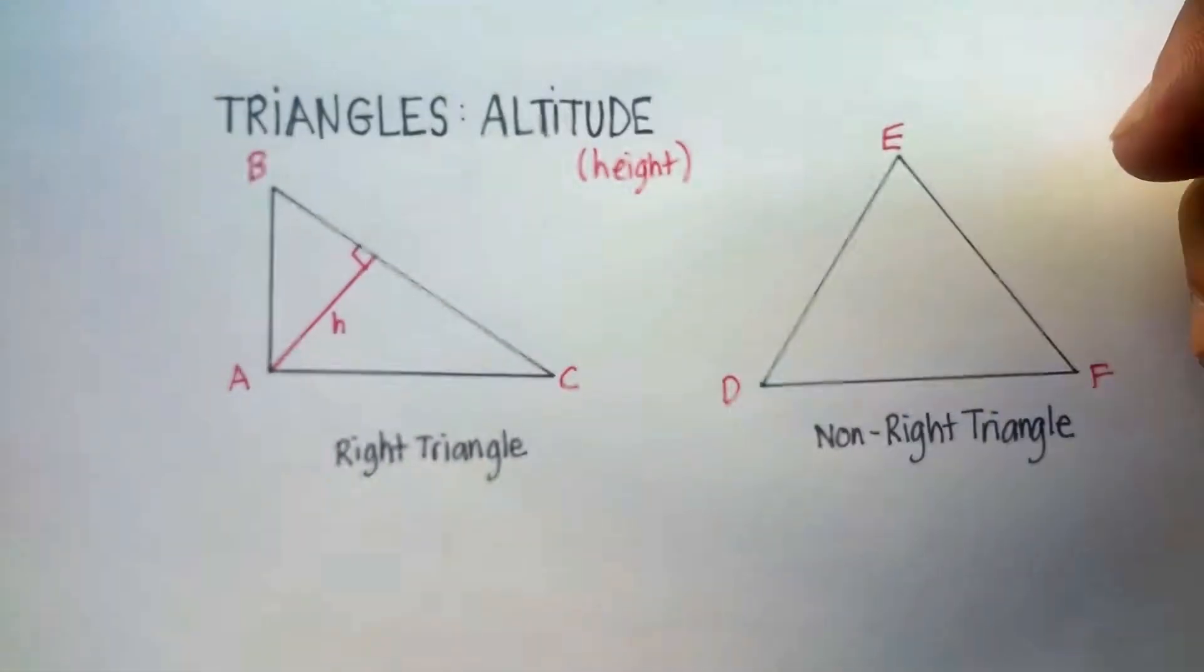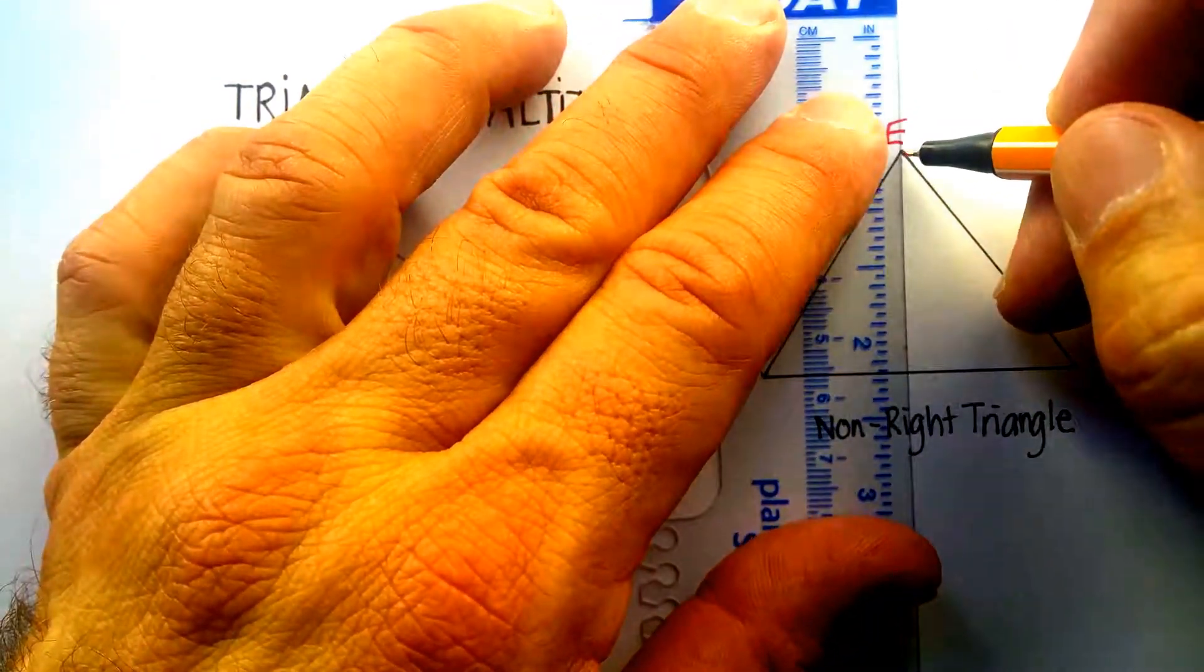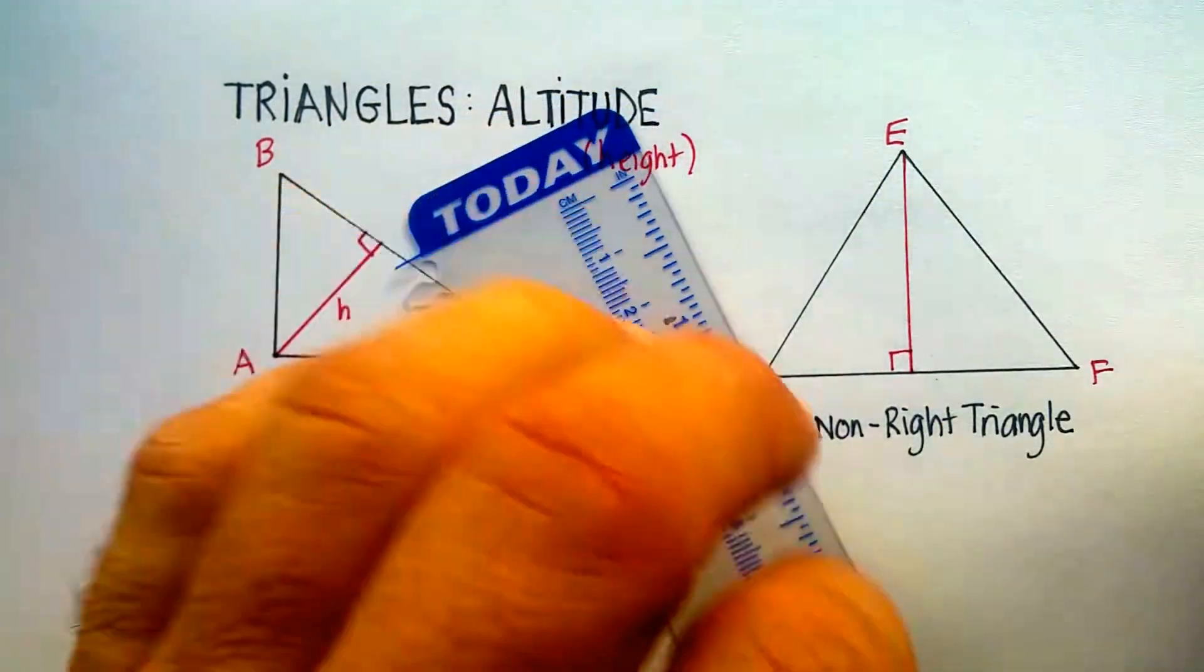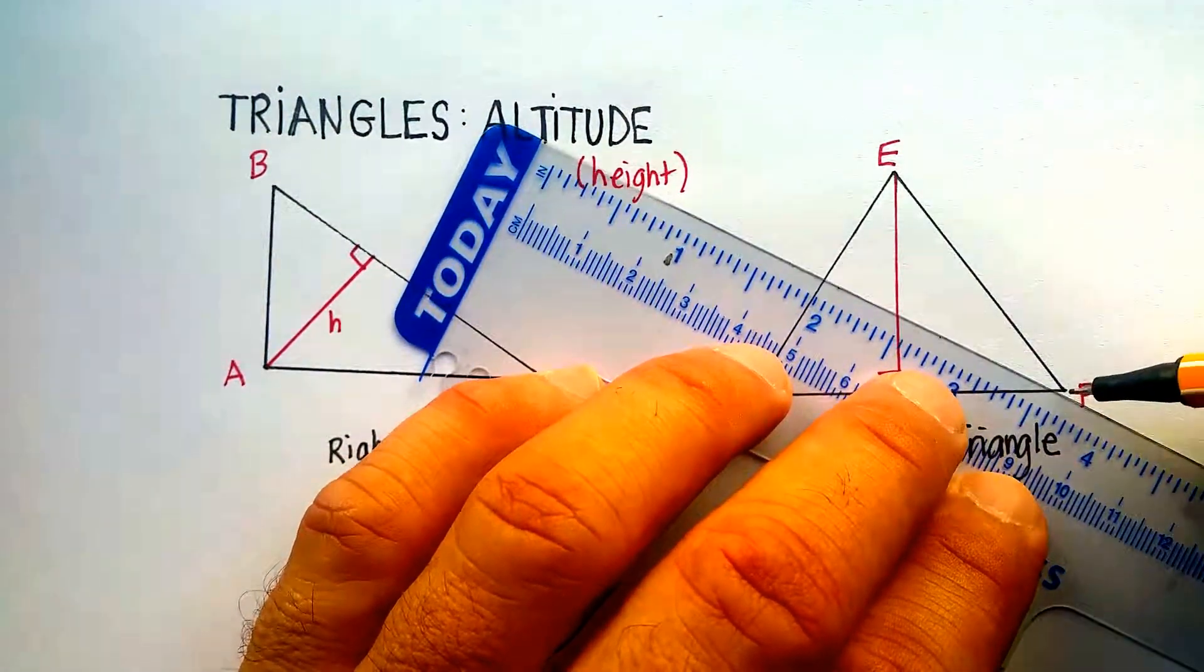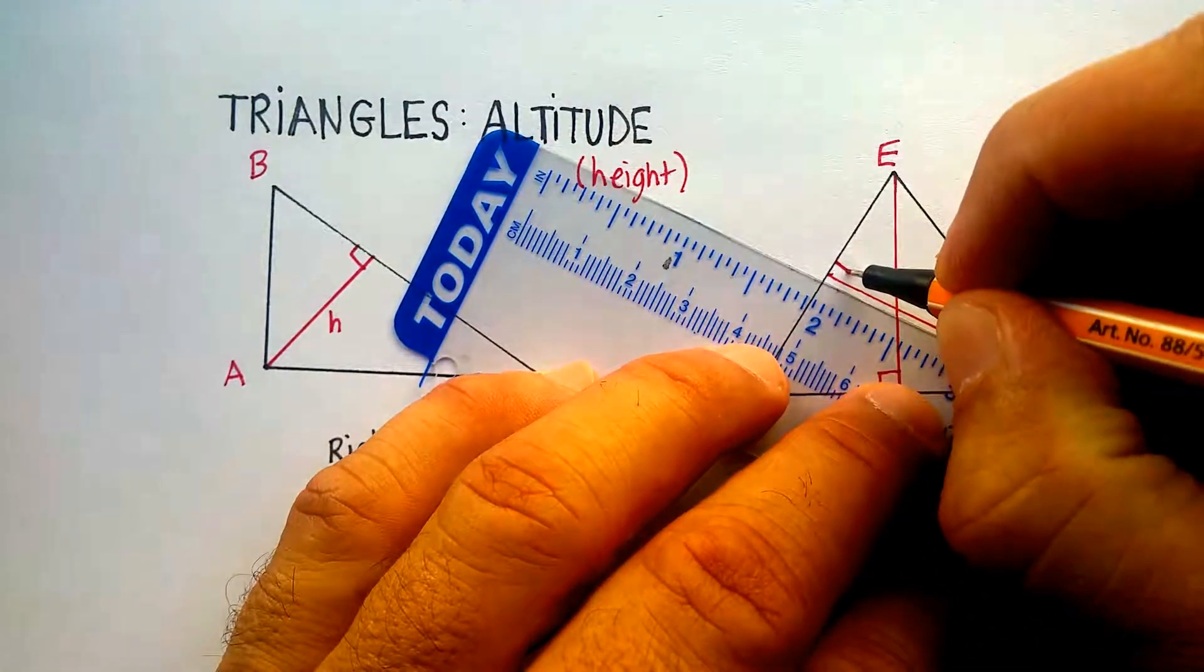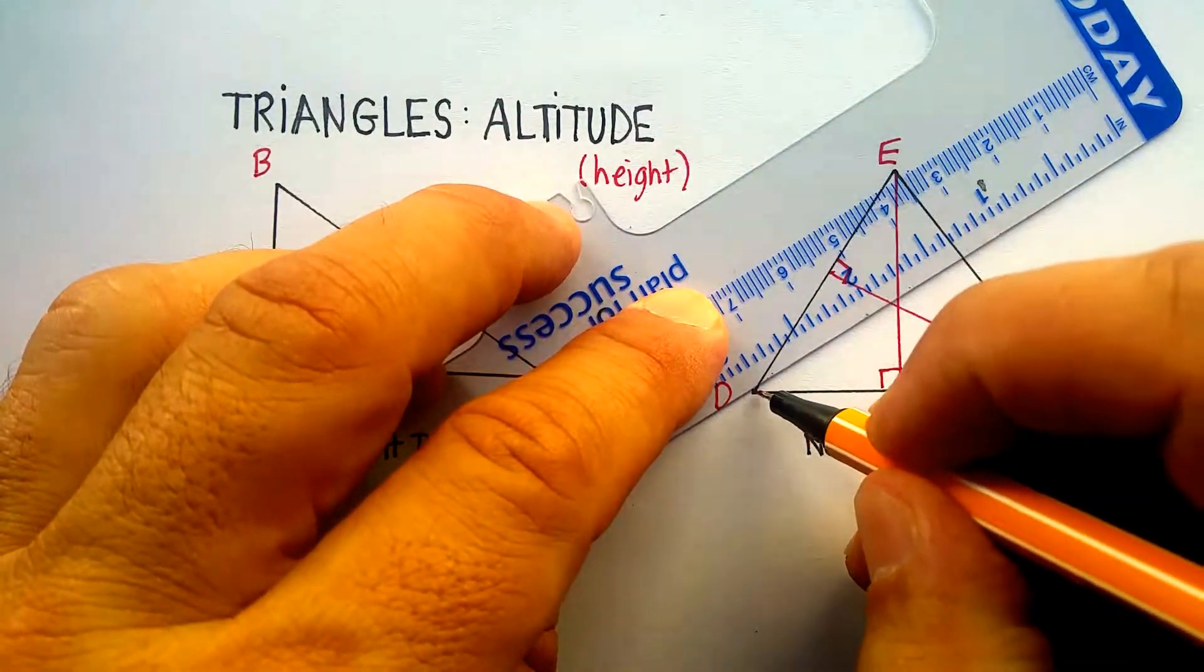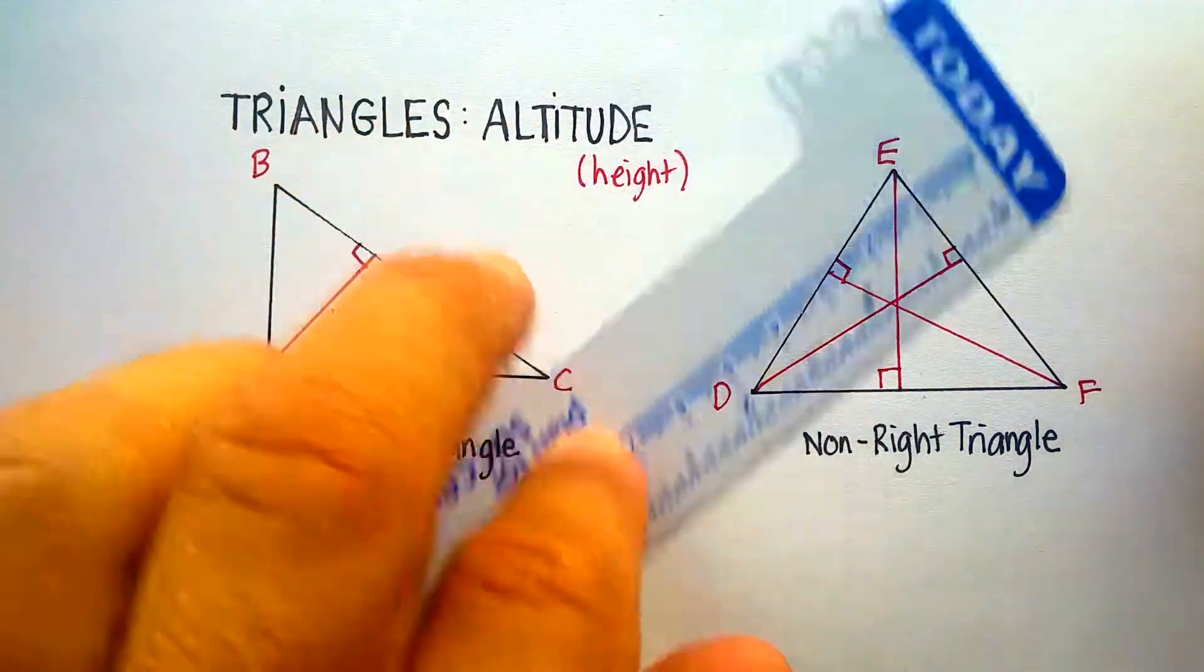Let's do that over here as well. So I start at one of the vertices, and then I drop a line that goes to the opposite side and creates a 90-degree angle. Let's do it again right here. And let's make sure that we're creating a 90-degree angle with the opposite side. There we go. Indicated by that, 90 degrees.